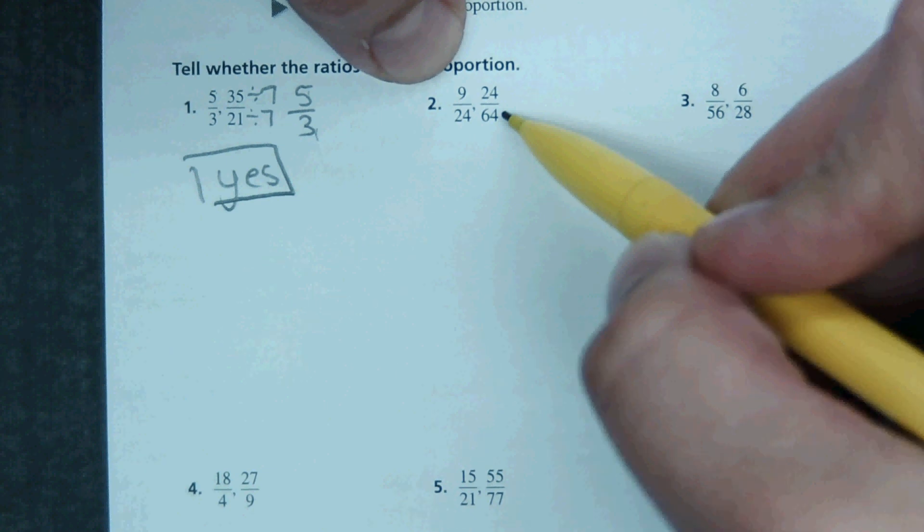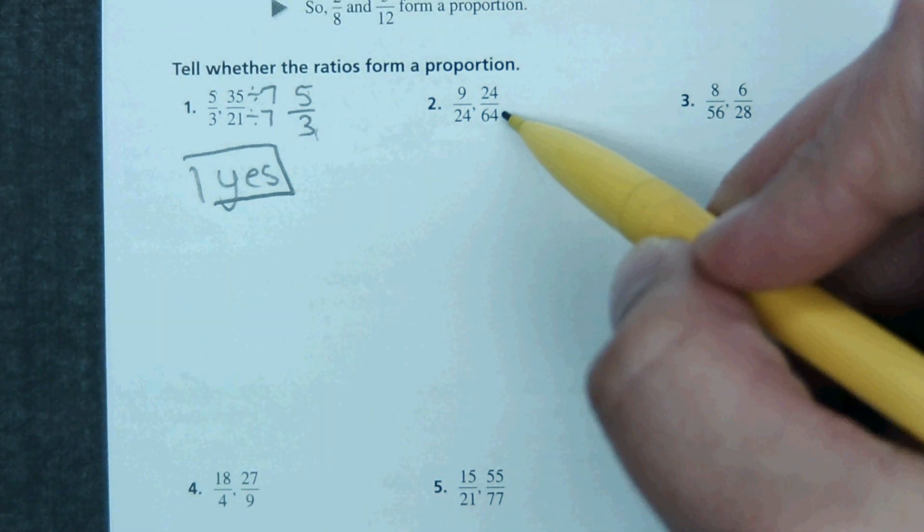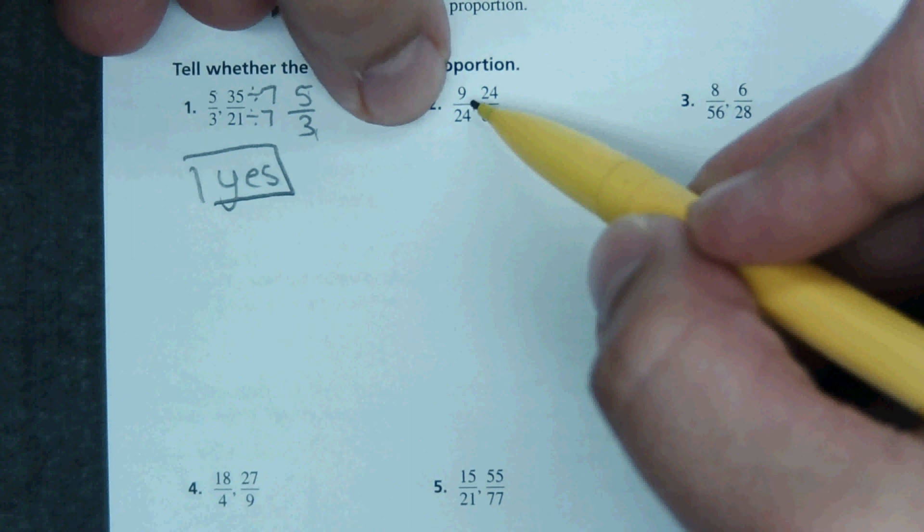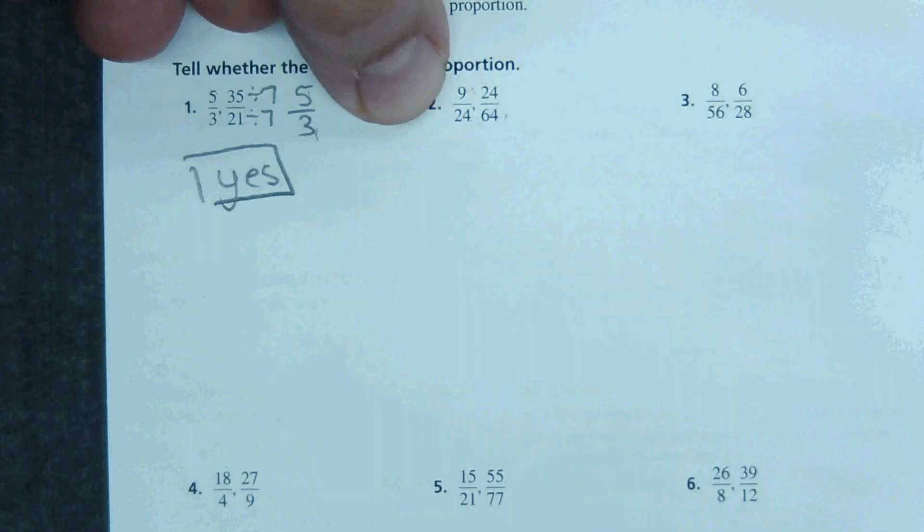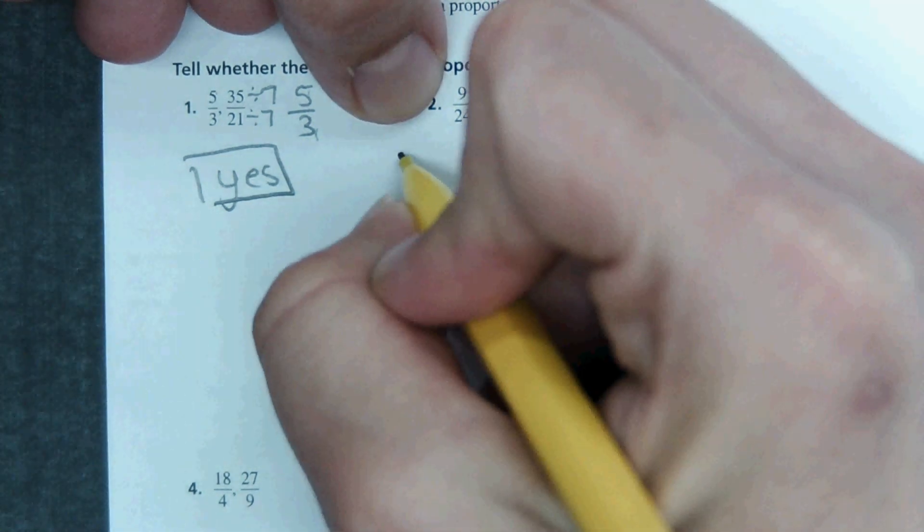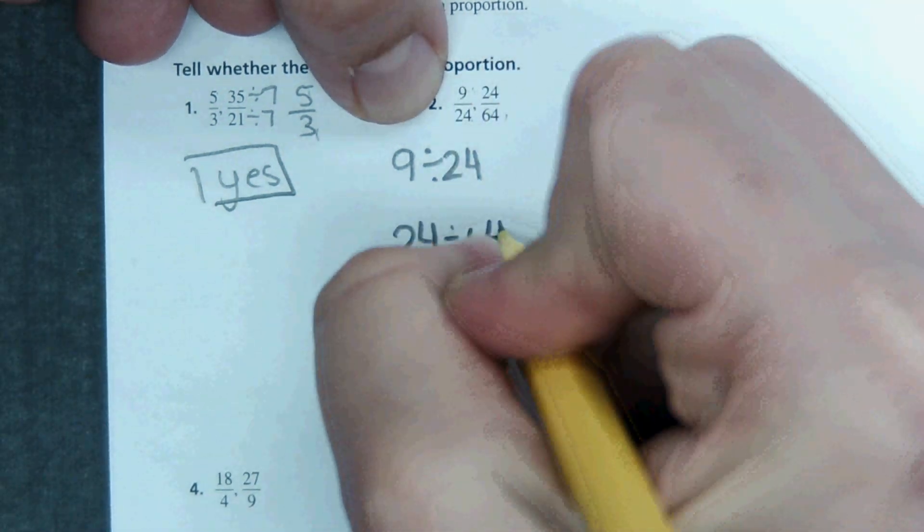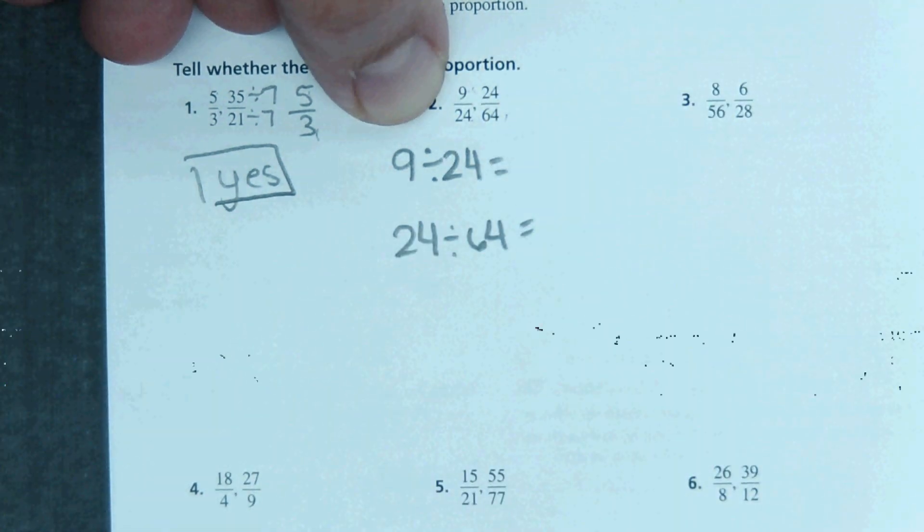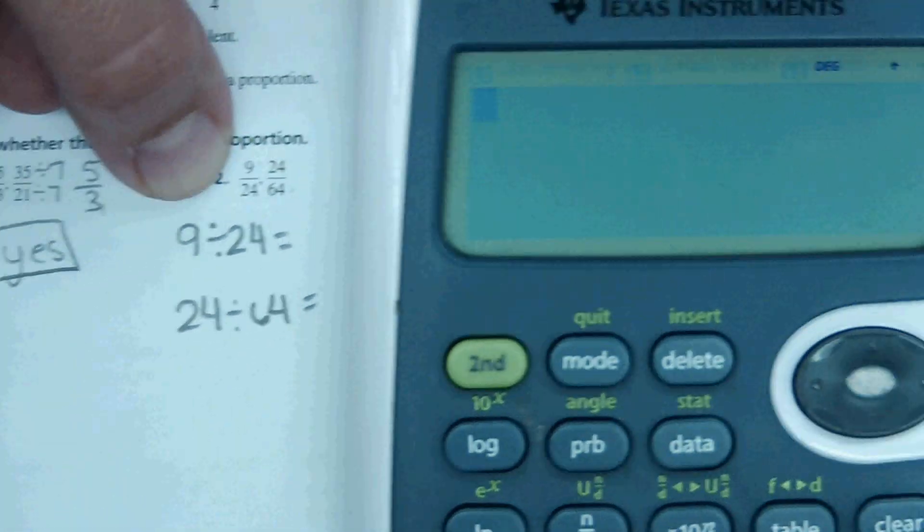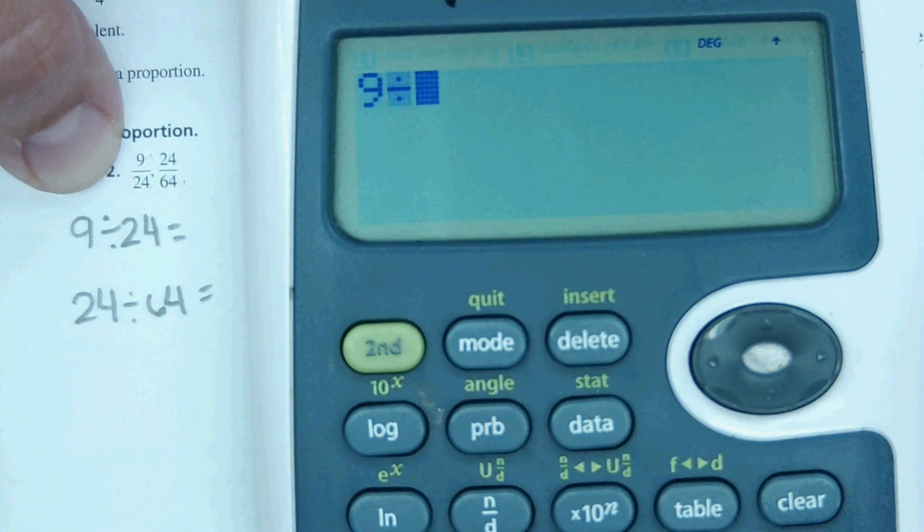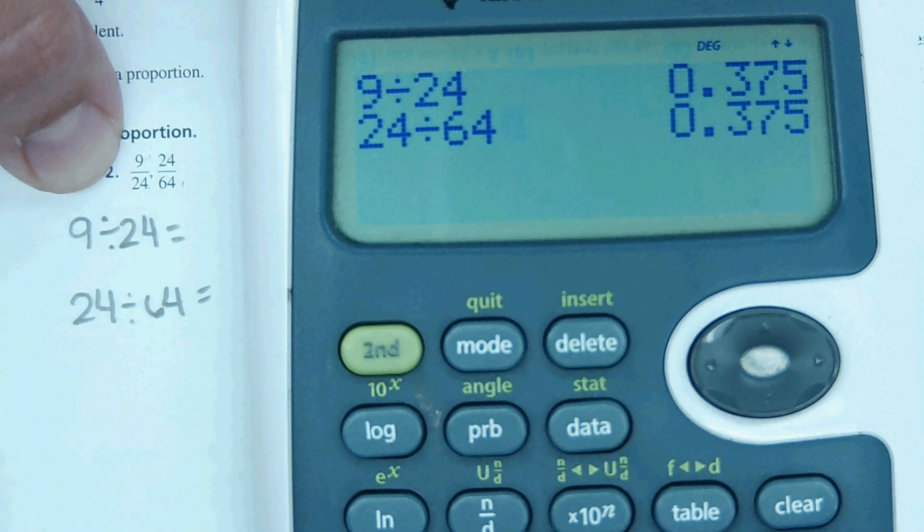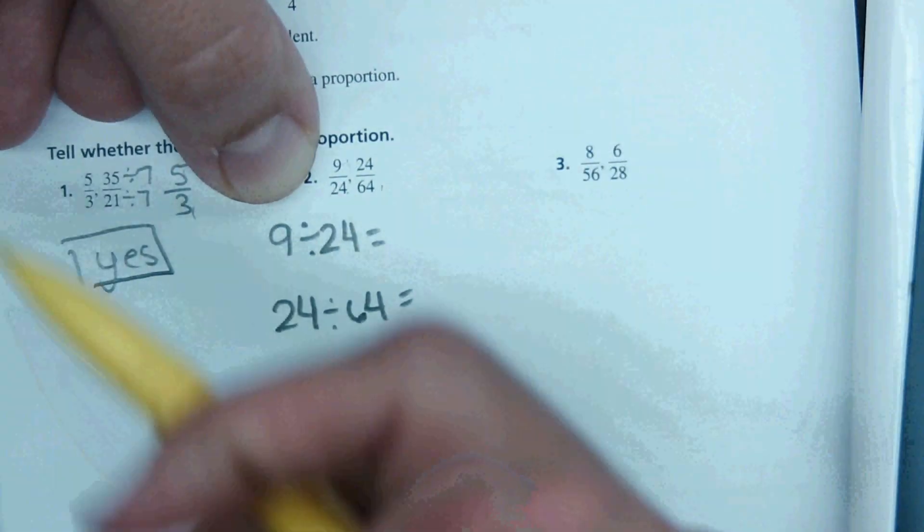And then we look at number two and try to do the same thing, but it's a little bit more complicated. So another way to see if ratios are proportional is to divide these and figure out if they come out to the same decimal. So the next way is to do like 9 divided by 24 in a calculator and 24 divided by 64 in a calculator. And if they come out to the same decimal, they are proportional.